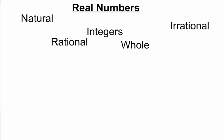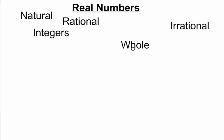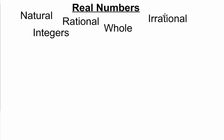So we have five of them here. We have natural numbers, rational numbers, integers, whole numbers, and irrational numbers.